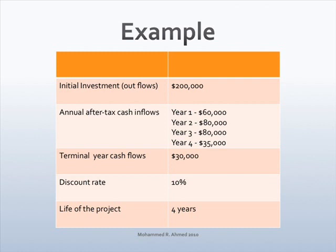Initial investment is $200,000. Annual after-tax cash flows for year 1 is $60,000, year 2 is $80,000, year 3 is $80,000, year 4 is $35,000, and the terminal year cash flows are $30,000. The discount rate is 10% and the life of the project is 4 years.